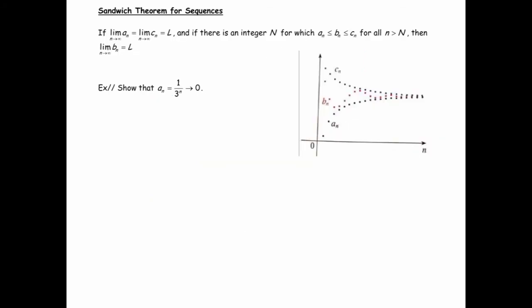We're going to finish our discussion of sequences by talking about what's called the Sandwich Theorem. Although some textbooks call it the Squeeze Theorem. This says that if the limit as n goes to infinity of a_n equals the limit as n goes to infinity of c_n, let's say those equal L, and if there is an integer for which those two sequences sandwich a third one called b_n for all n values bigger than that uppercase N value, then we can conclude that the limit as n goes to infinity of b_n equals L.